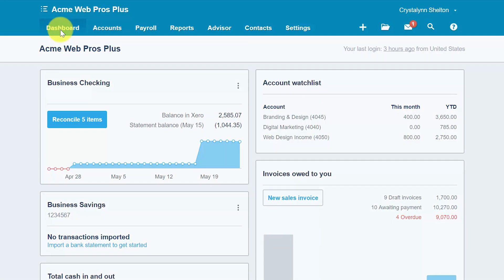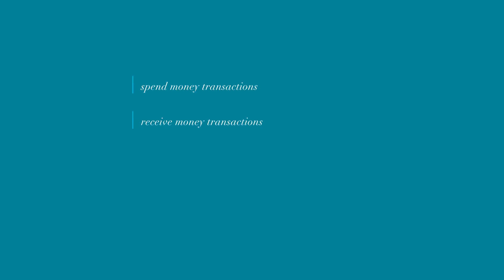These transactions fall into one of three categories: spend money transactions, receive money transactions, and bank transfers. Let's discuss when to use each transaction and how to record the transaction in Xero.